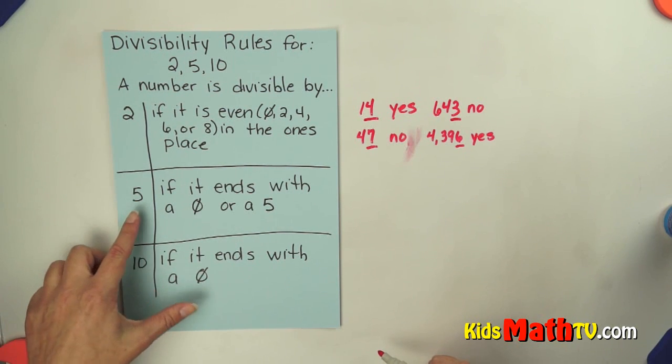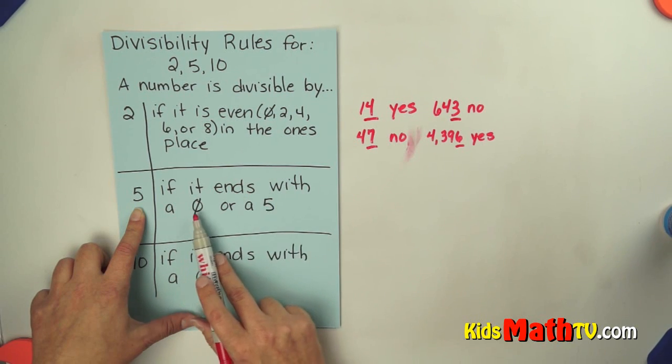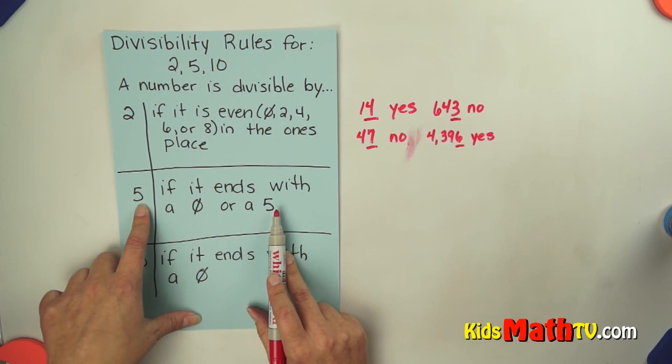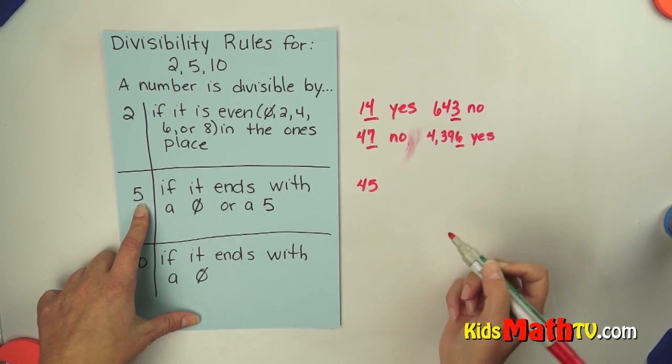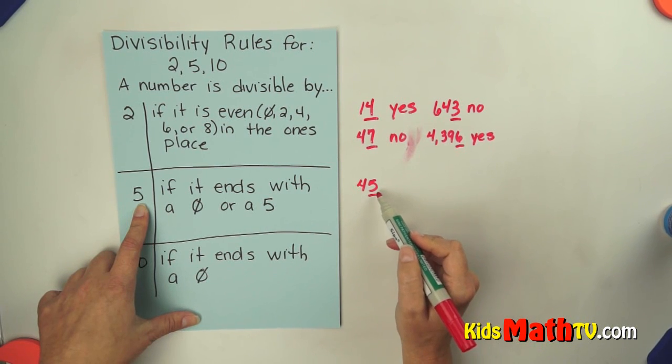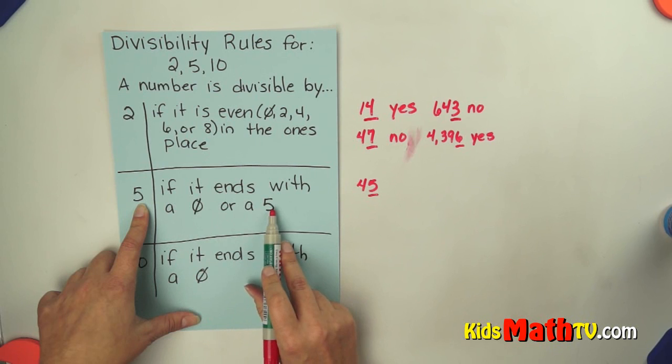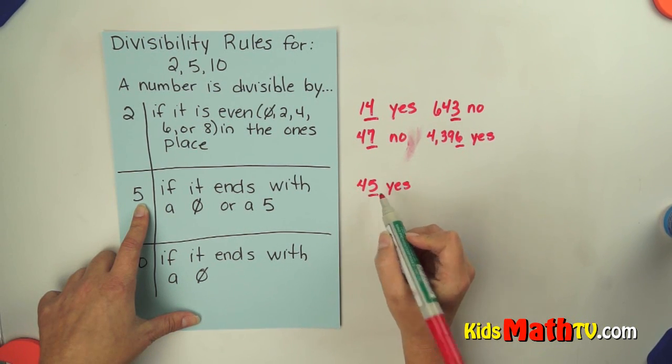The divisibility rule for 5 is even easier than that. If the number ends with a 0 or a 5, it will divide evenly by 5. For example, if we have 45, we look at the last number. The ones place is a 5. It is a 0 or a 5, so yes, we can divide 45 by 5 evenly.